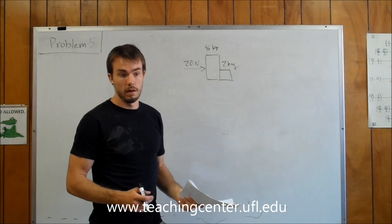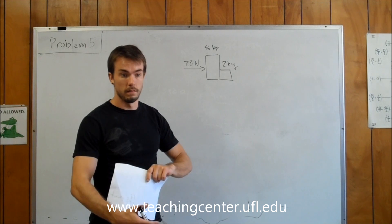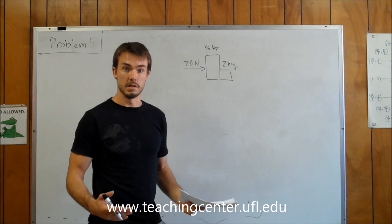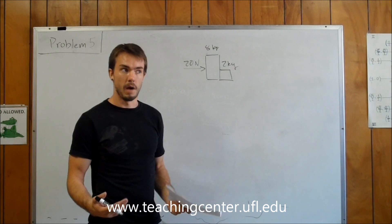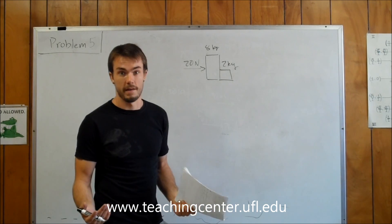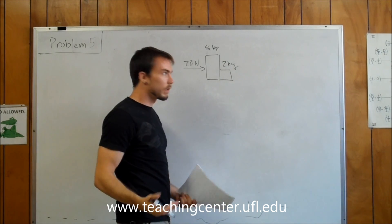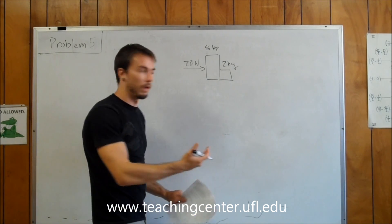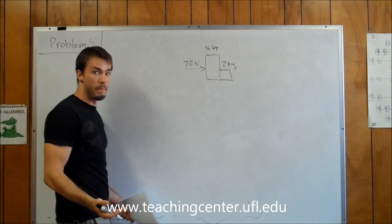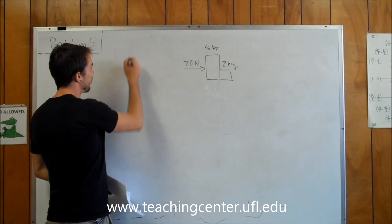You can either do it this way, or you can set up a system of equations using each of the blocks, but this way is much faster. So we're going to look at this system, and because they're right up against each other, we can treat them as one object, basically. One object with a mass of 10 kilograms.